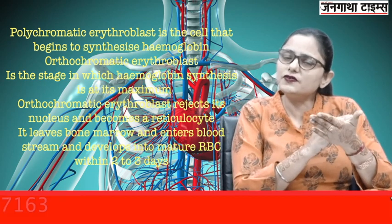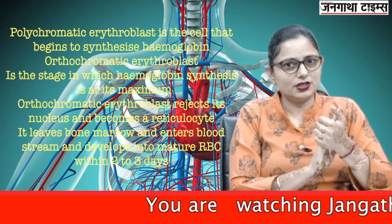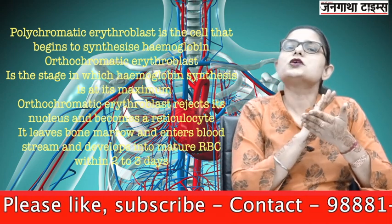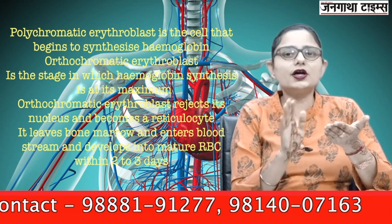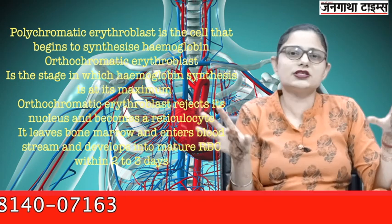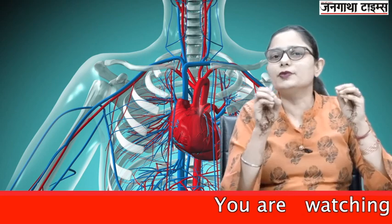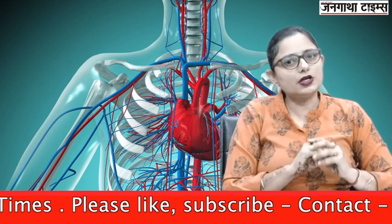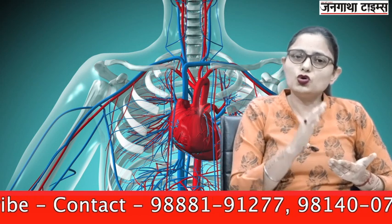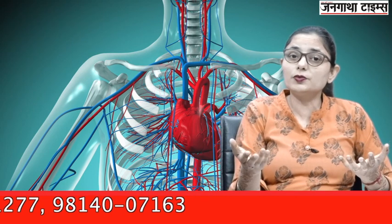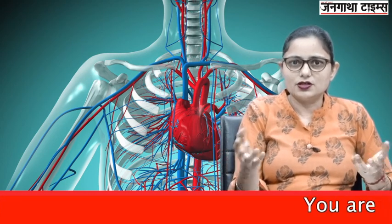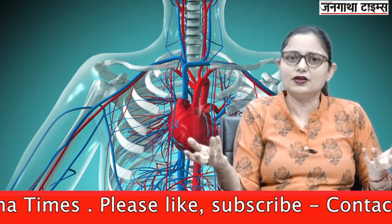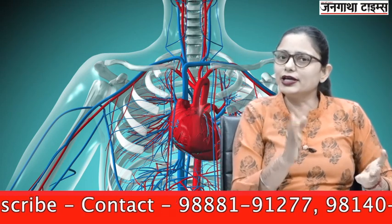This immature RBC leaves the bone marrow, enters the blood capillaries, and within 2 to 3 days it matures. A mature RBC has no nucleus, no mitochondria, no ribosomes, no endoplasmic reticulum, and no cell organelles, so its nutritional requirement is minimal. It is not producing any enzymes or proteins — just performing transportation. Because it cannot produce its own proteins, no repair occurs, and it slowly becomes fragile. Within 80 to 120 days, it starts breaking and then dies.